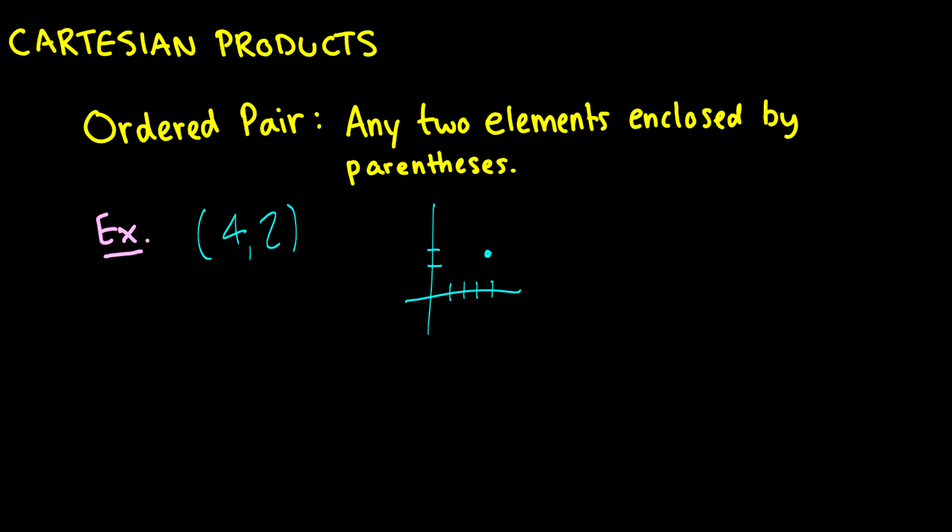What's special about ordered pairs is that if you reverse the elements, they are not equal to each other. We can see here that (2,4) and (4,2) are completely different points. Now, a lot of texts will put them in these pointy brackets to symbolize that they are an ordered pair, and I would highly suggest you do that.